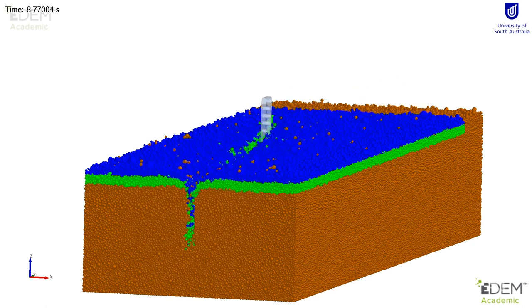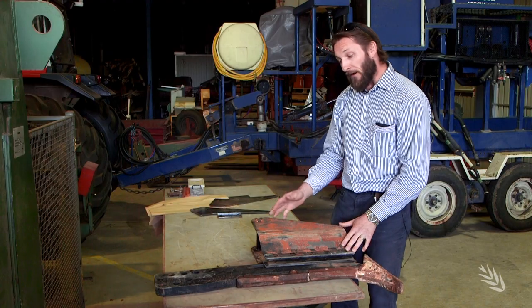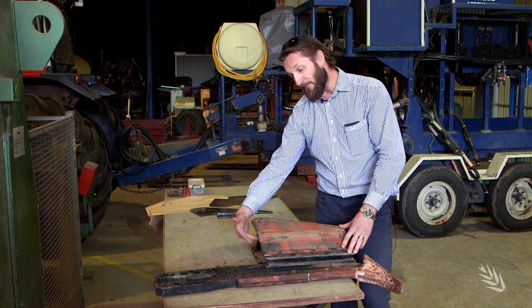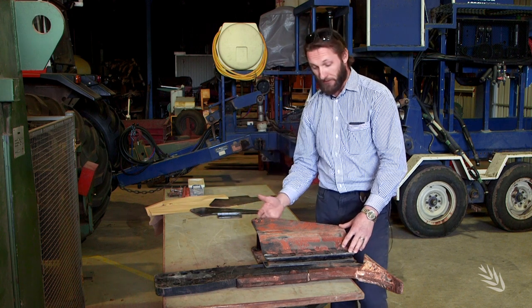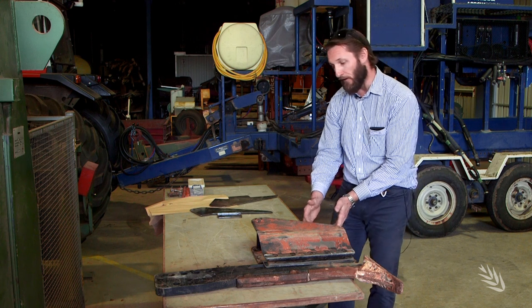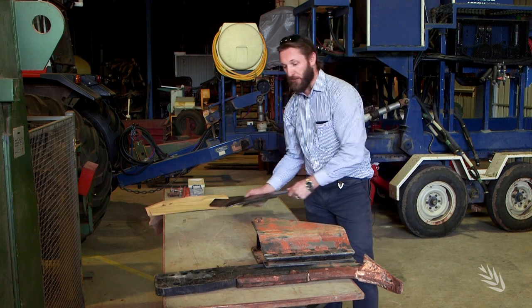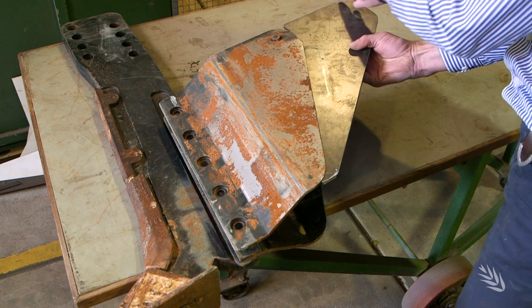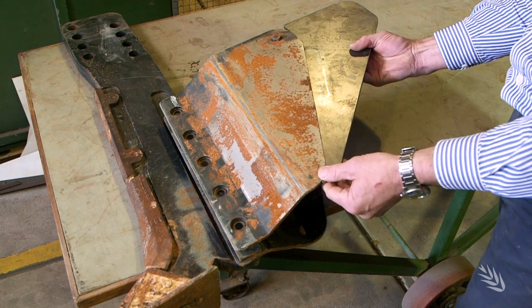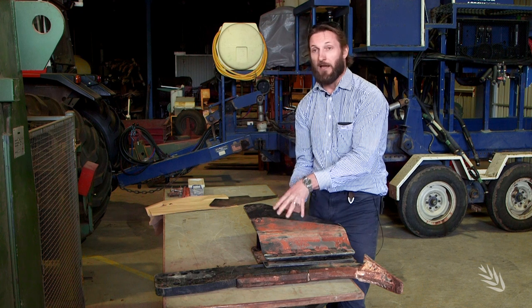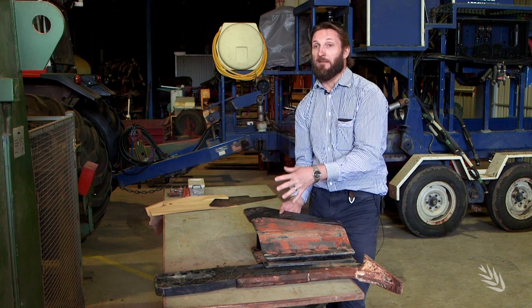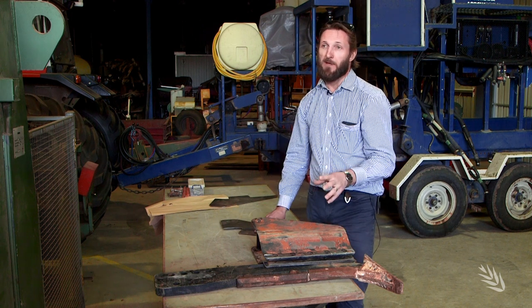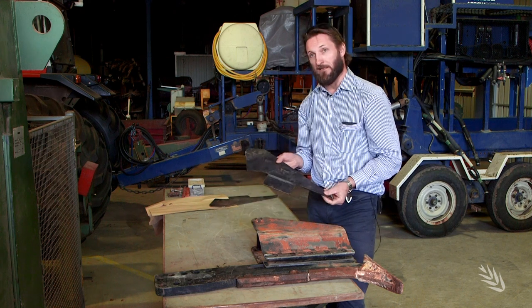What we found from our DEM simulations was that as we increased the forward speed of operation, the amount of material included behind this plate actually reduces, especially deeper in the profile. So we made a modification—we had an extension plate here that bolts onto the back of the inclusion plate. The simulation showed that this sidewall length was important, especially at speeds around seven kilometres an hour. We took this inclusion plate to the field, did some validation, and found that was actually the case. More material was included deep in the profile with a longer inclusion plate, and this had minimum effect on the draft force.